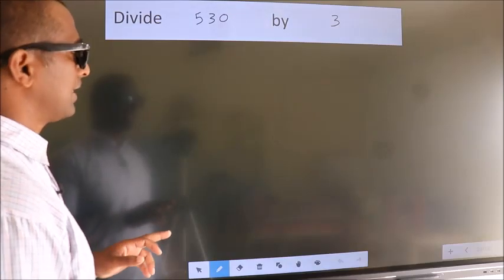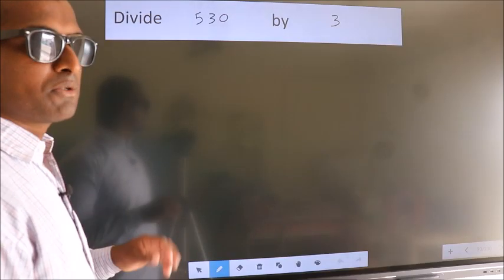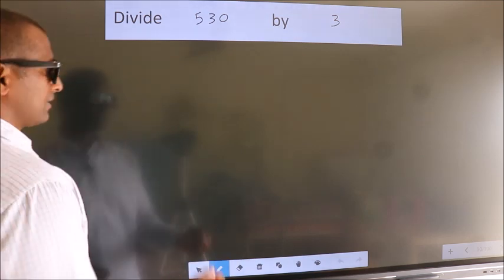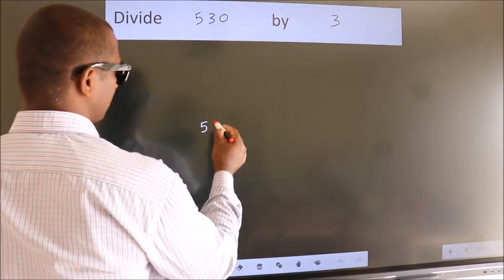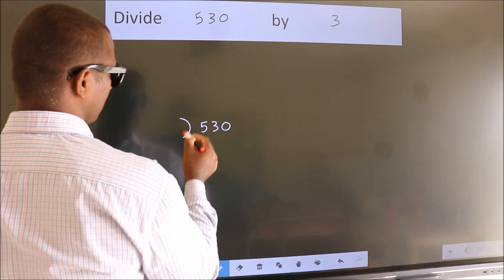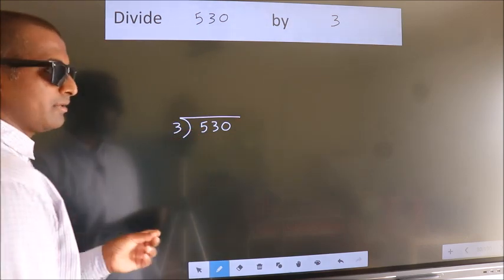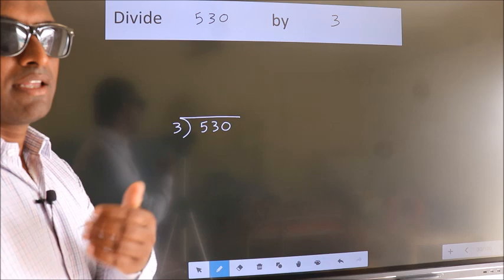Divide 530 by 3. To do this division, we should frame it in this way: 530 here, 3 here. This is your step 1. Next.